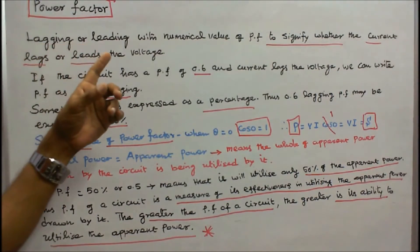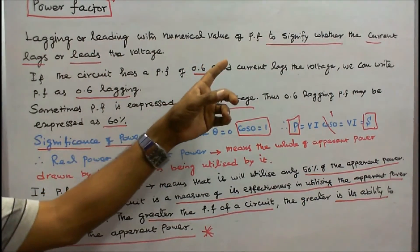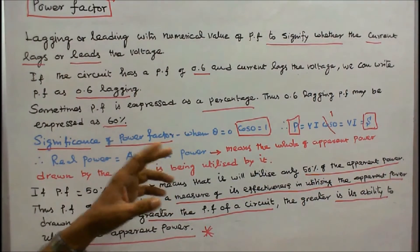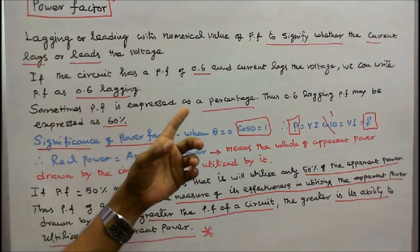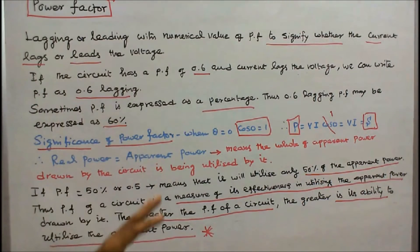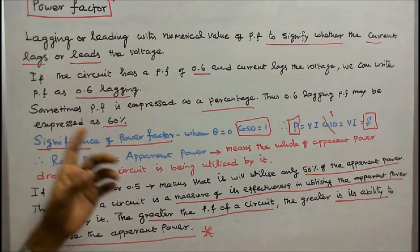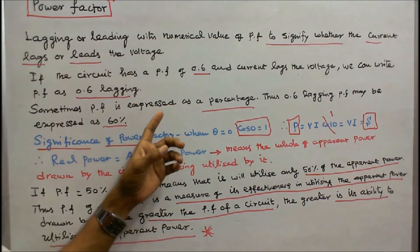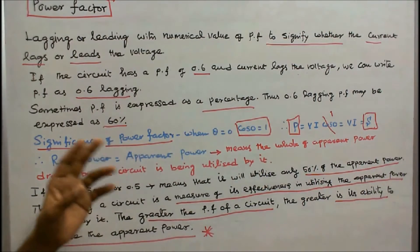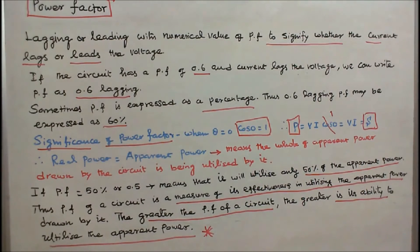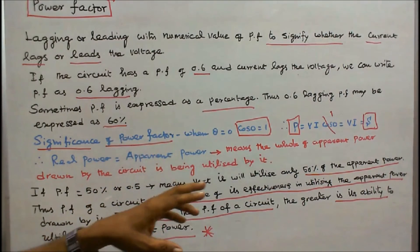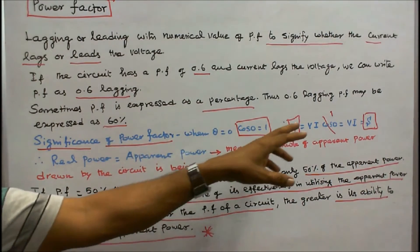Power factor is specified as lagging or leading along with its numerical value, to signify whether the current lags or leads the voltage. If a circuit has a power factor of 0.6 and current lags the voltage, we write power factor as 0.6 lagging. Sometimes power factor is expressed as a percentage; thus 0.6 lagging may be expressed as 60%. When theta equals 0, cos 0 equals 1.